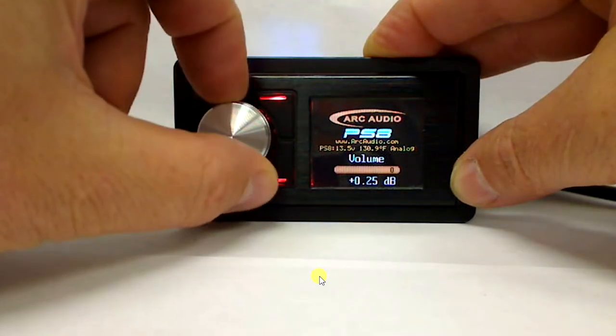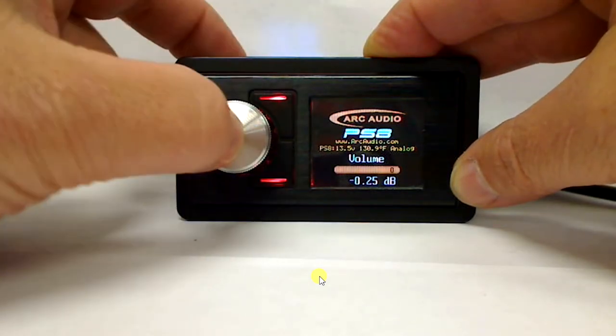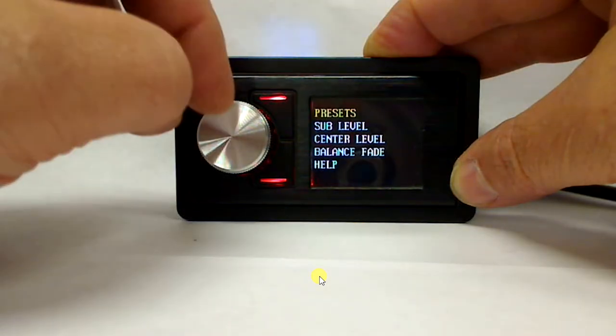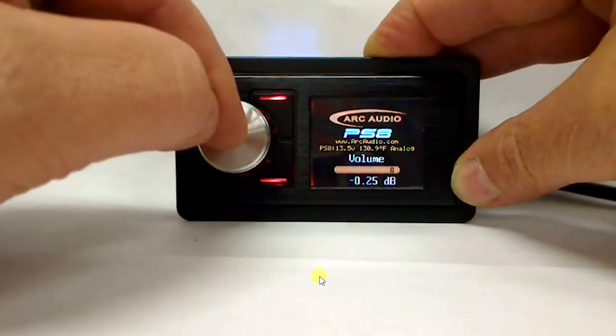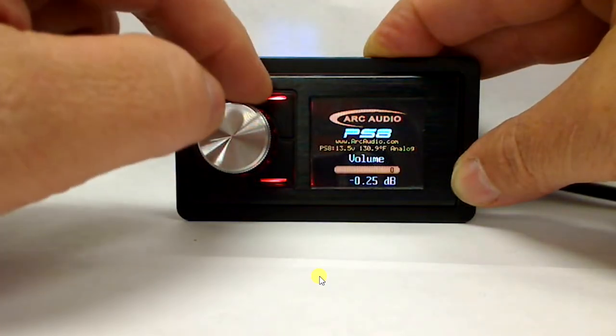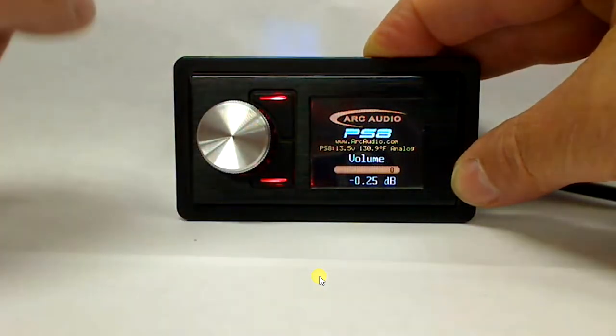We've got a rotary volume knob as well as there's an encoder built into it and a momentary tact switch, so you can push the center button and that's one of your function buttons. So that's function one. Then we have the top button which is function two and the bottom button which is function three.